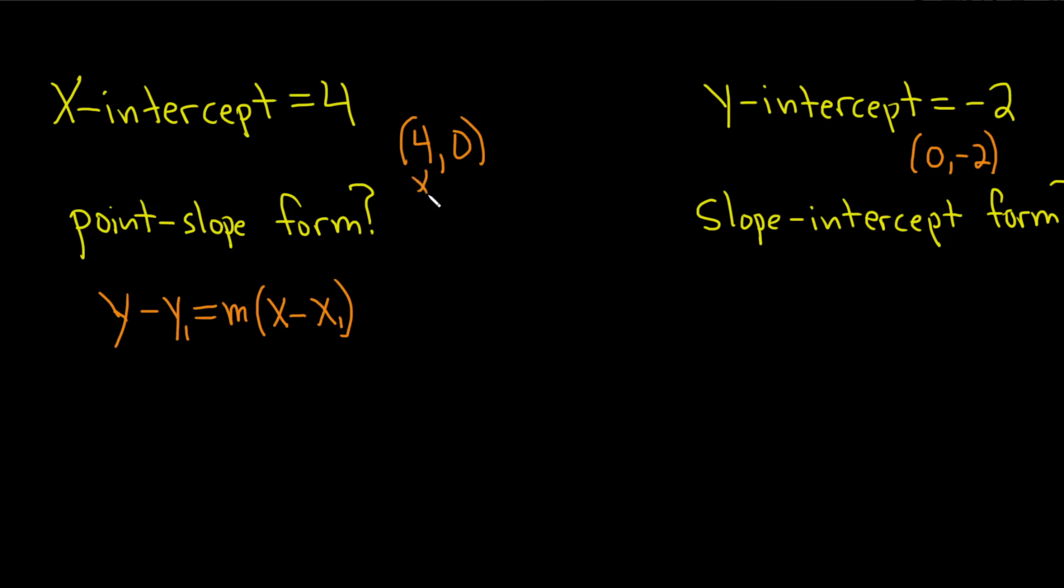Now we're going to call this x1, y1, and that's going to be what we're going to use here. To find m, though, we're going to need x1, y1, and x2, y2. So I'm going to call this x2, y2.